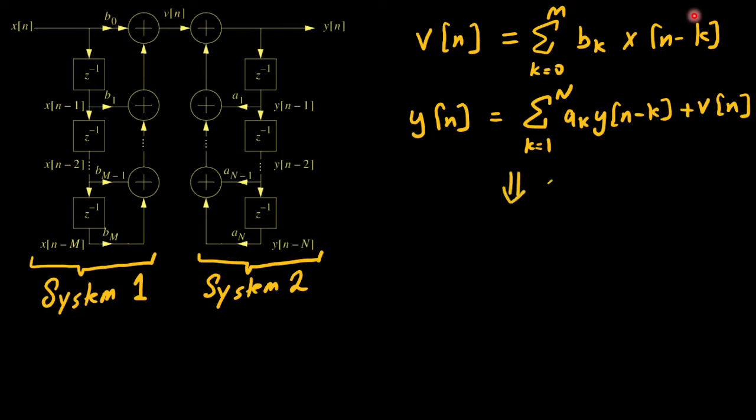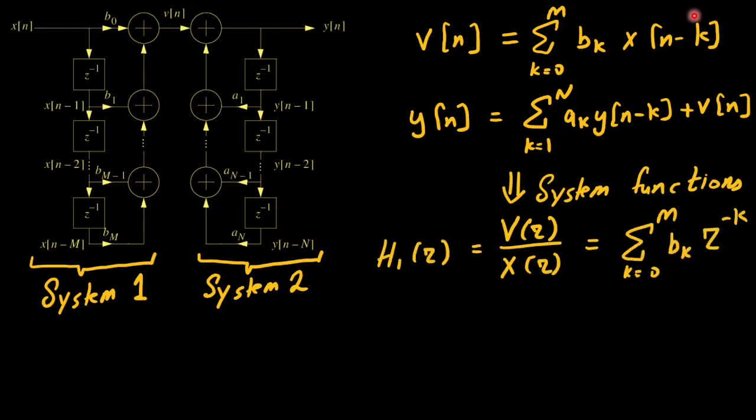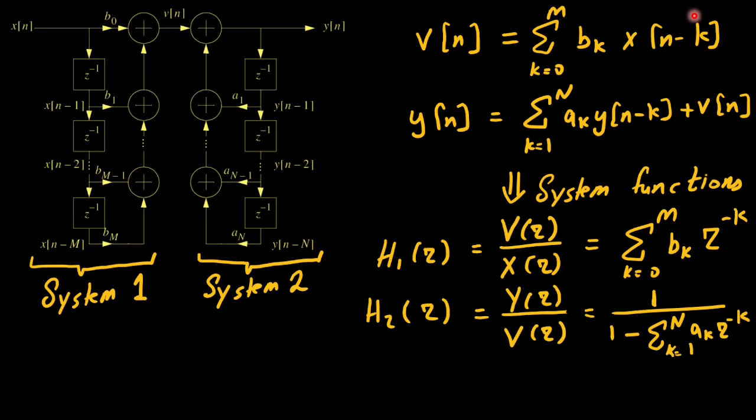For the two, let us formulate system functions as h1 of z which is equivalent to v of z over x of z. And this is simply a summation from 0 to m bk z power minus k.